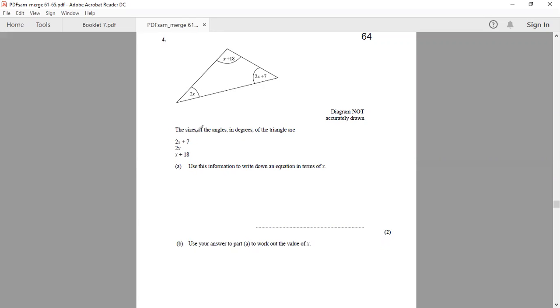Let's read the question. The sizes of the angles in degrees of the triangle are 2x plus 7, 2x, and x plus 18. And we are required to use this information to write down an equation in terms of x.